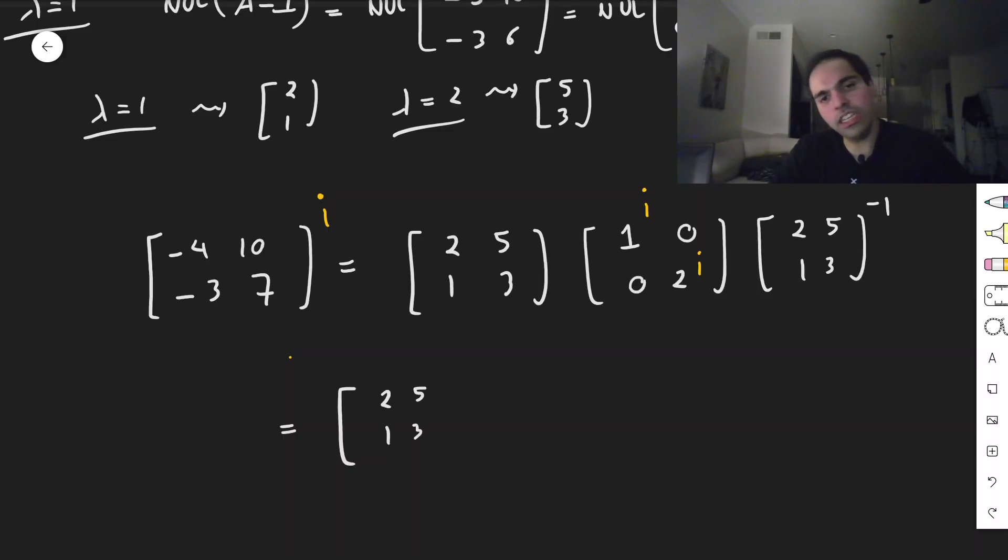And so in particular, what we get, 2, 5, 1, 3, 1 to the i, at least taking the principal value, we get 1, 0, 0, 2 to the i, and then the inverse of that.